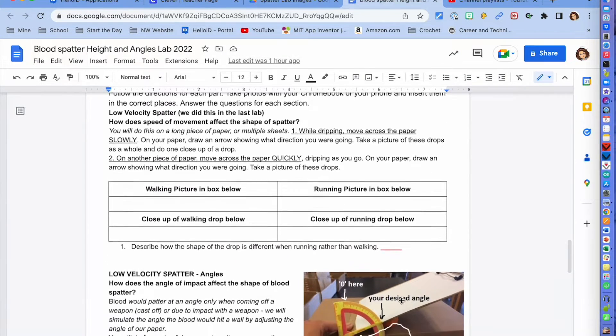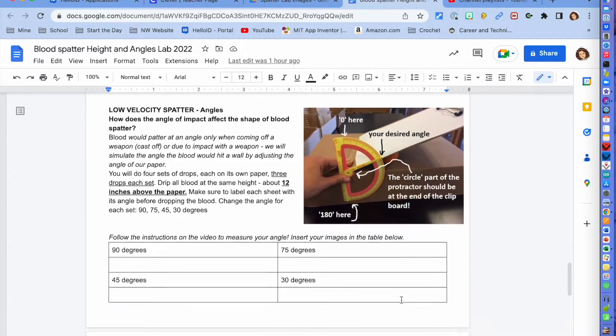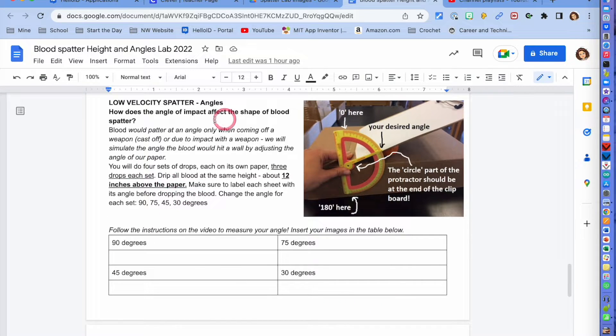Then you're going to do a low velocity spatter which is actually the angle at this point. So I'm going to have a template for you that you can tape to the wall or another clipboard and have it set along the back that has the four angles on it and you're going to lift your clipboard to match the correct angles and you're going to do three drops for the 12 inches above the paper.